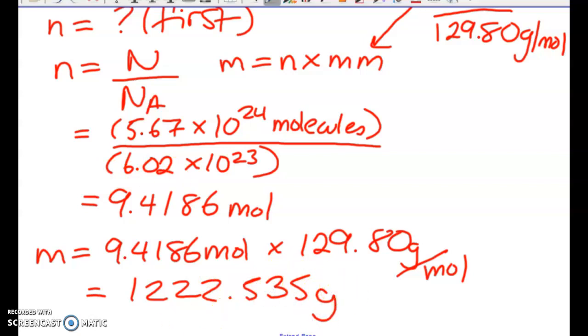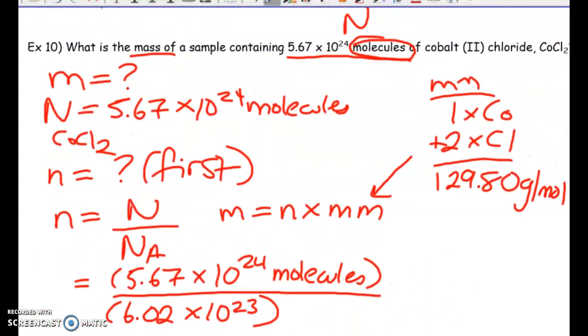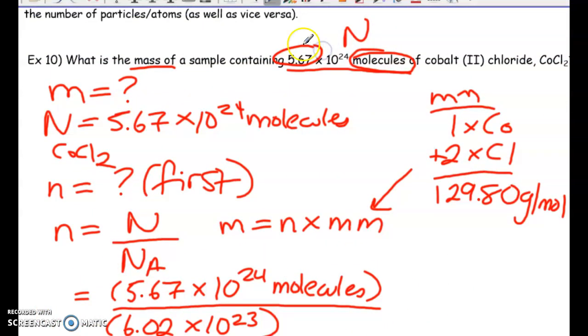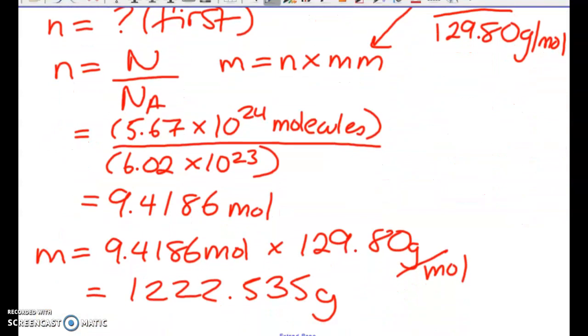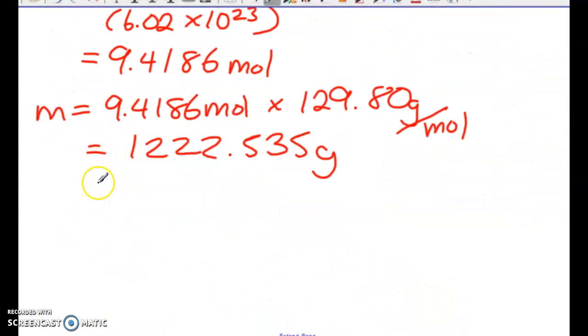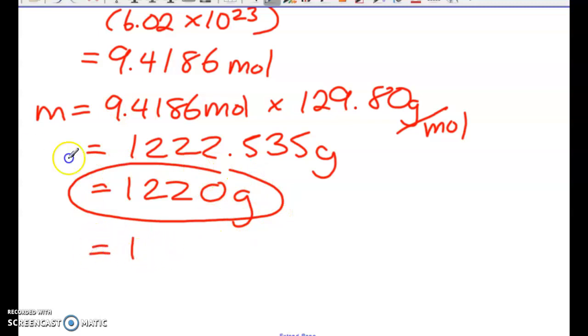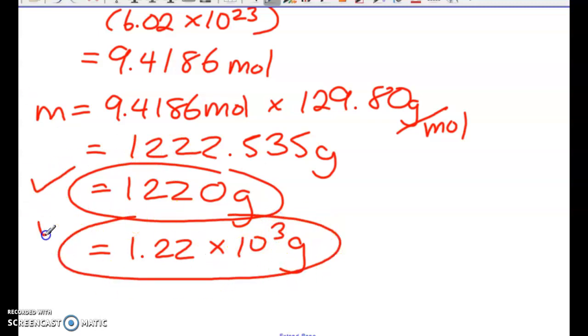Okay, so now we have to look for sig figs. So up at the top, we have three significant digits. So we have to round this to three significant digits. So this can go one of two ways, right? They're the same thing. I can say 1220 grams, or I can do 1.22 times 10 to the 3 grams. Both of these would be correct.